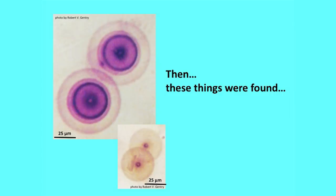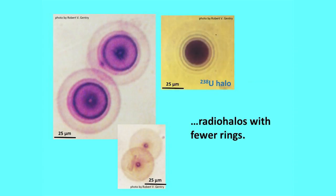But looking in the same rocks, we found other little halos. Besides the uranium radio halos, we find these other little halos that at first glance look like a uranium radio halo. But actually there are five rings on the uranium halo and fewer rings on these others. In fact, the lower one has only one ring, others have three, and the uranium has five. So what's going on here?